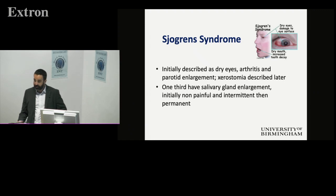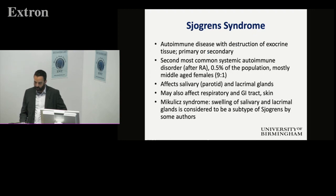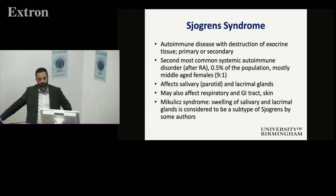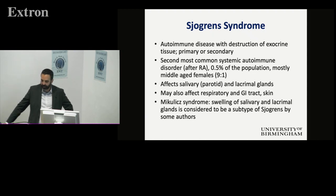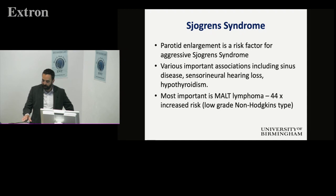Sjogren's syndrome is something you might get asked to see by the ophthalmologists. You've got dry eyes, inflammatory conditions of the joints, and parotid enlargement in around a third of patients. It's tender, comes and goes, then becomes more permanent in nature. It's an autoimmune condition — second most common after rheumatoid — usually affecting women more than men, with the parotid gland being the most common salivary gland affected. If you have parotid involvement with Sjogren's, it may signify a more aggressive form.